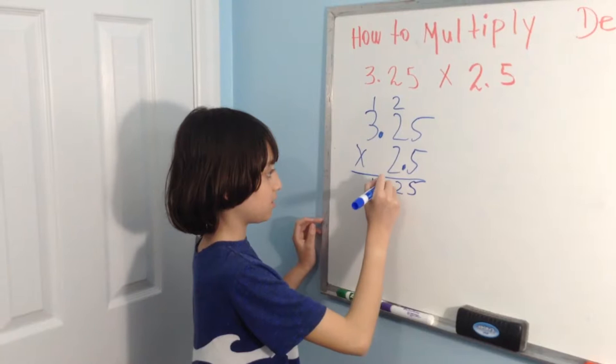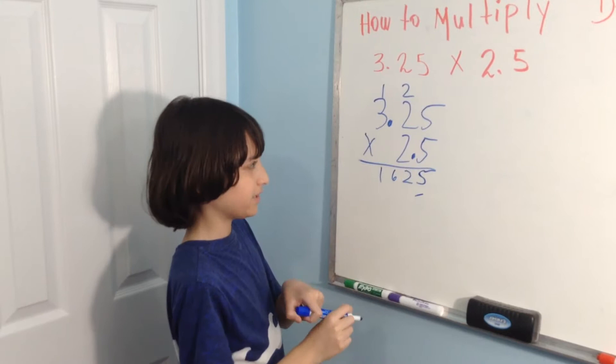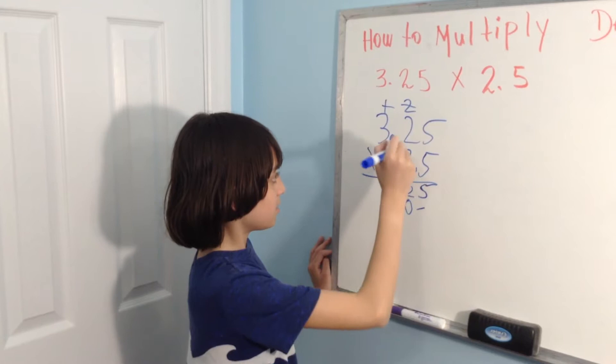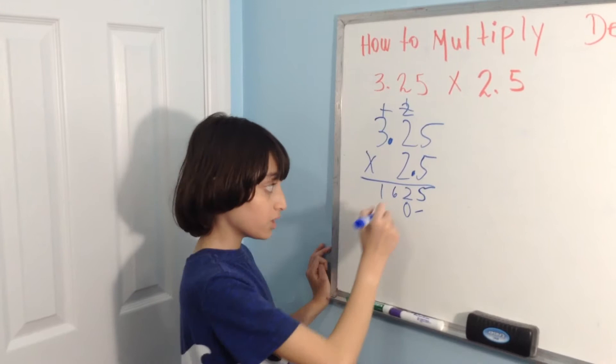Move one space. Then you do the next operation. 2 times 5 is 10. 2 times 2 is 4, plus 1, which is 5. 3 times 2 is 6.